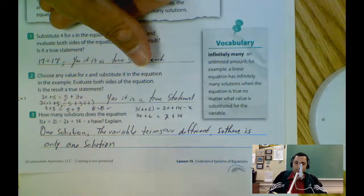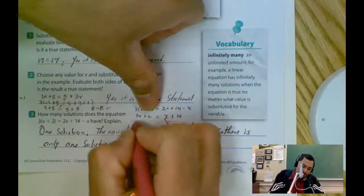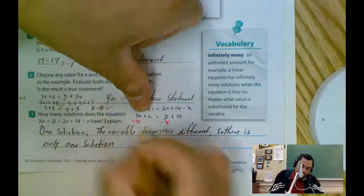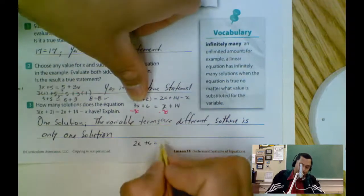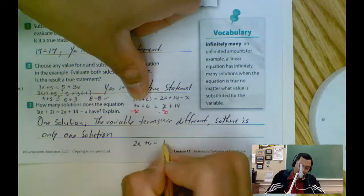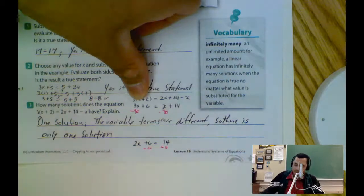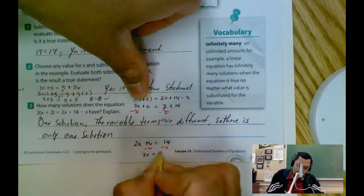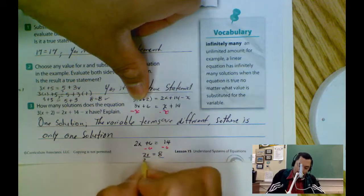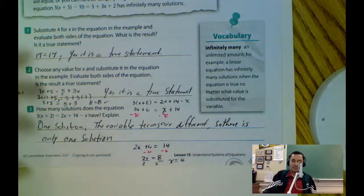Which one is that one solution? I'll subtract x from both sides: 3x minus x is 2x plus 6 equals 14. Then I subtract 6: 14 minus 6 equals 8, so 2x equals 8. Dividing by 2, x equals 4. That's our solution: x equals 4.